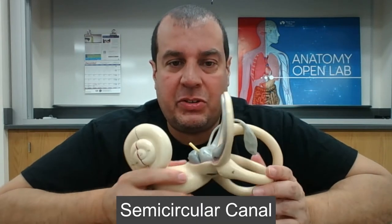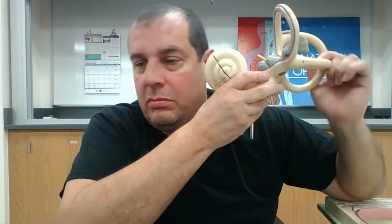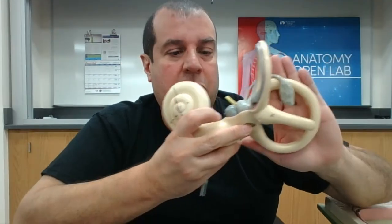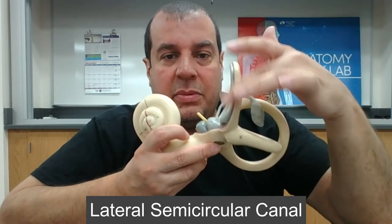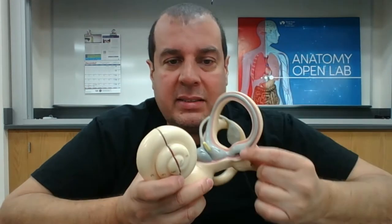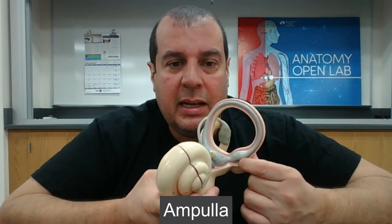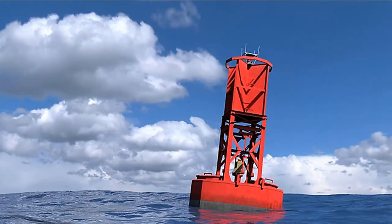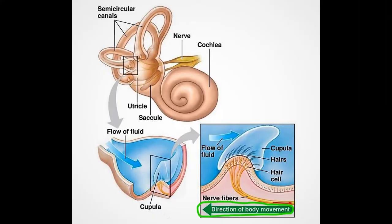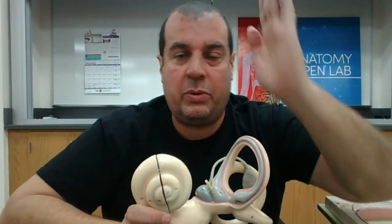The semicircular canals of the left ear include the posterior semicircular canal, the lateral semicircular canal, and the anterior semicircular canal. At the base of each canal is a swelling called the ampulla, which contains sensory structures called the crista ampullaris. Inside is a structure called the cupola, which acts like a buoy. For example, if you move to the left, the cupola deflects to the right, signaling your body about the direction of movement. This is part of dynamic equilibrium.